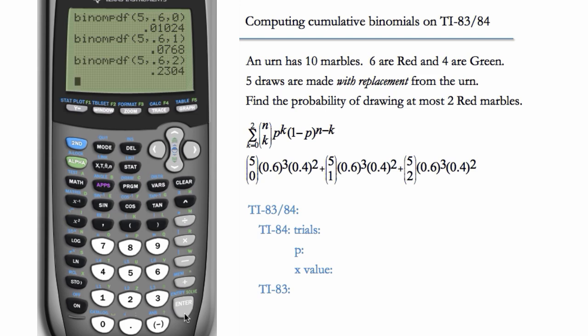And now we just want to sum these three numbers. So if we add them up, we should get about 0.31 or 0.32. All right, so now let's see how to do this all in one step, rather than having to use binompdf three times.